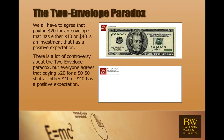Everybody agrees with this. There's a lot of controversy about the solution to the two envelope paradox. But everybody agrees that paying twenty dollars for a fifty-fifty shot at either ten or forty is a good deal. Now, let's do the same thing again. But let's not open our envelope.